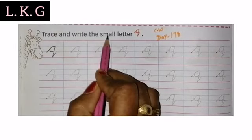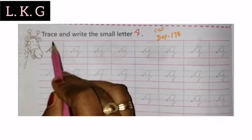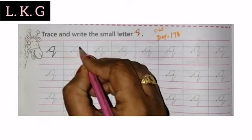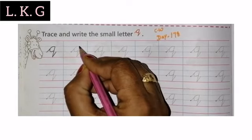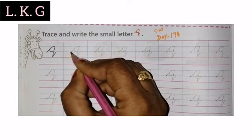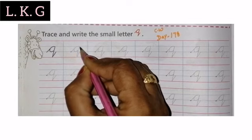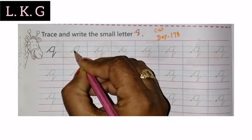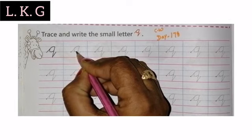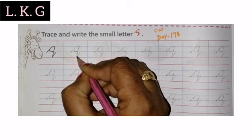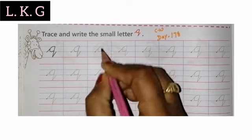Trace and write this small letter Q. Okay, let us start. Students, you have to keep your pencil here. You don't have to keep your pencil up here — no need to make this line. You have to start from here. First of all, you have to write C, then go up, then come down, then again move — Q for Queen. Students, these are the strokes; you have to look properly.